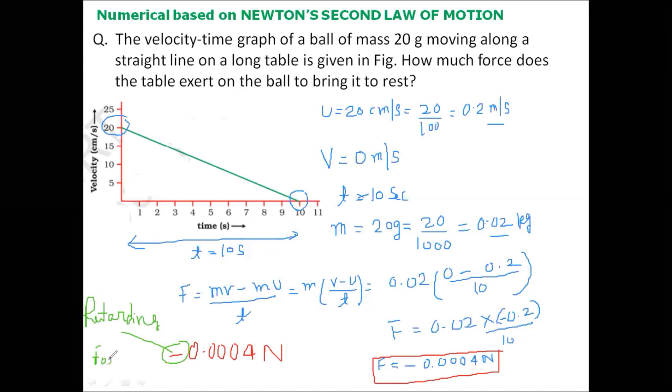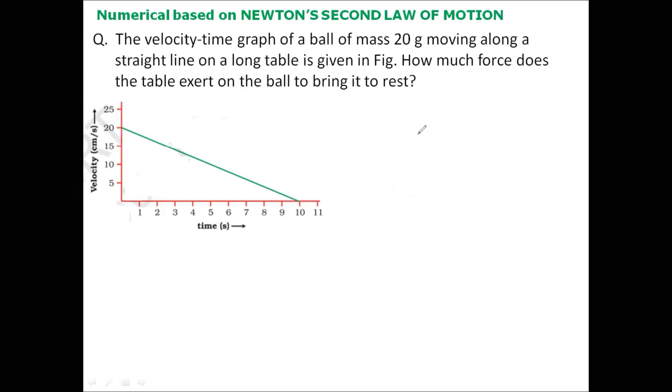We can calculate force in this question by an alternate method also. From Newton's second law of motion, we know force is given by F = ma. From the graph we can calculate acceleration. We know in a velocity-time graph, acceleration is given by the slope of the line, and the formula for slope of line is given by perpendicular divided by base. We already studied this in the chapter on motion.